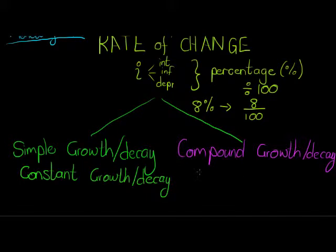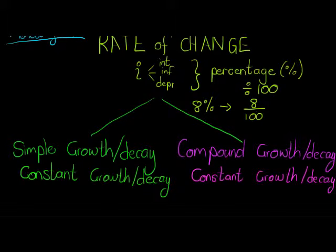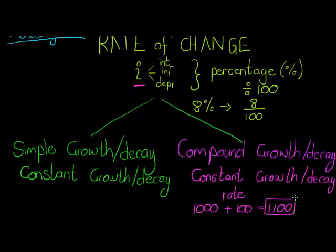However, in compound decay, I have constant growth or decay rate. So in other words, this rate stays the same every year, and the rate is calculated on a different amount every year. So if I had a thousand grand in my savings and in my first year I get a hundred grand interest, then in the new year I'll have a thousand one hundred grand. And now my interest will be calculated on the thousand one hundred grand.